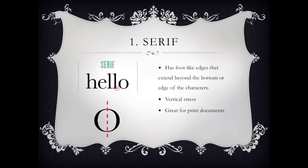First, we have the serif font. To identify it, it has foot-like edges that extend beyond the bottom or edge of the characters. Another way to identify it is that it has a vertical stress — like here we have the O in the example below. This font is great for print documents.